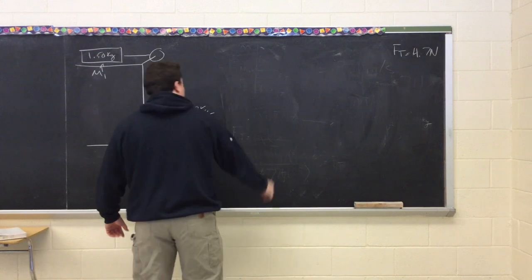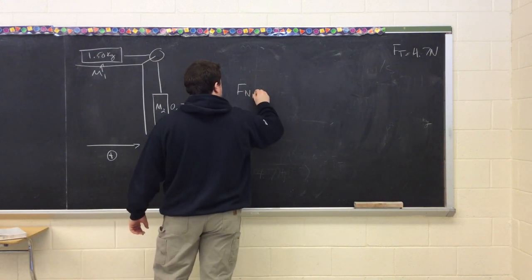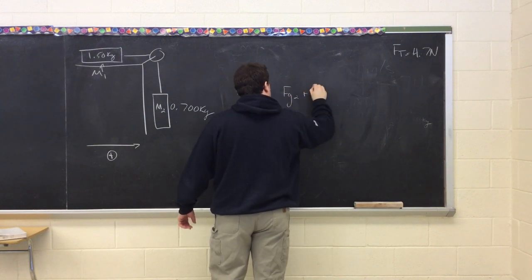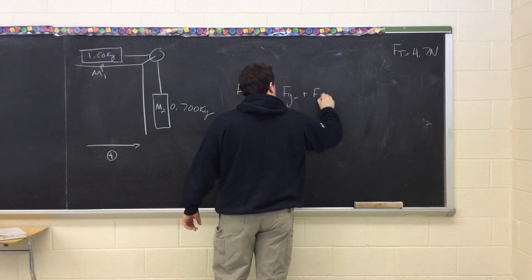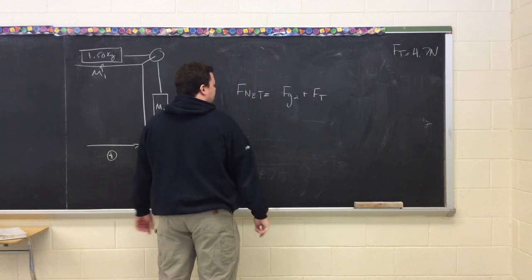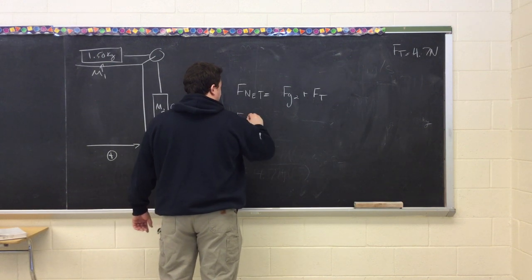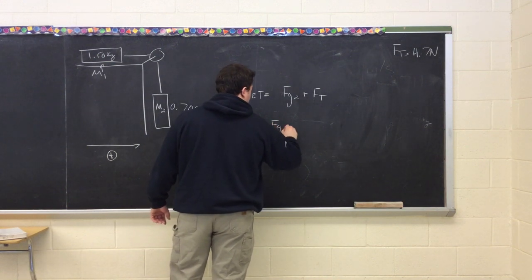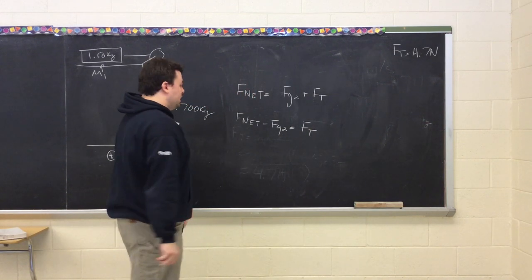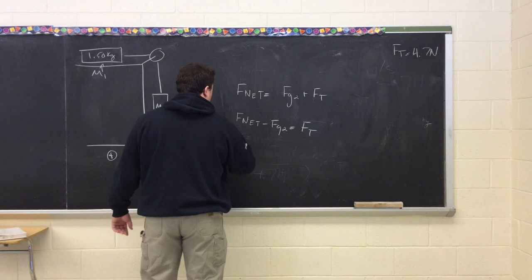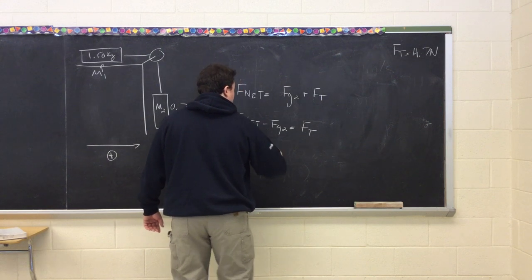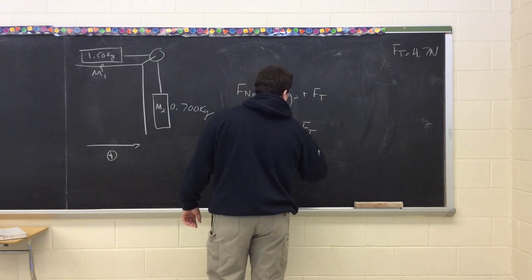So if we go back to m2, force net equals Fg2 plus force tension. We're solving for force tension. So F net minus Fg2 equals force tension.